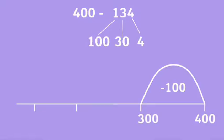Then they can take away the 30. That takes them to 270.